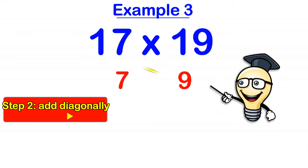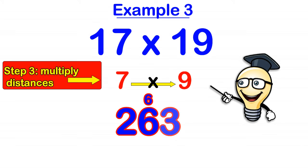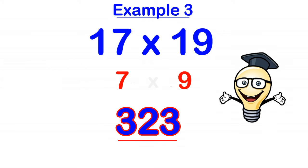Then we add diagonally. So we can do 17 add 9 or 19 add 7. Get the same answer either way. And that gives us 26. So we put that down. Then we multiply these distances. So 7 times 9 gives us 63. We put down the 3 first and we carry the 6. And we add that 6 to the 26 making 32. So the final answer is 323.